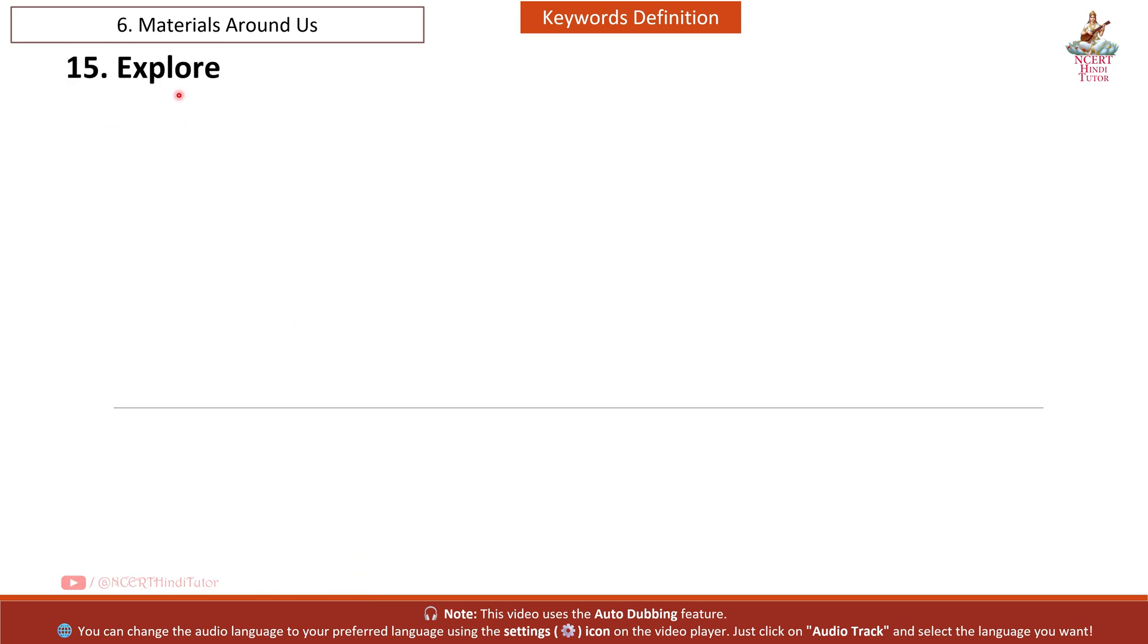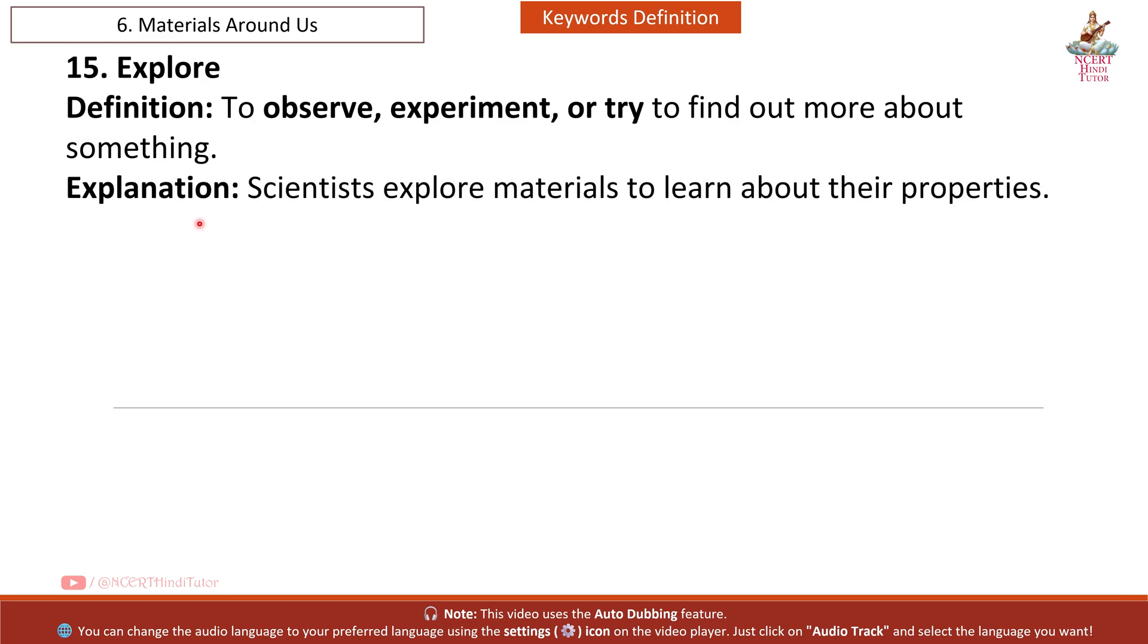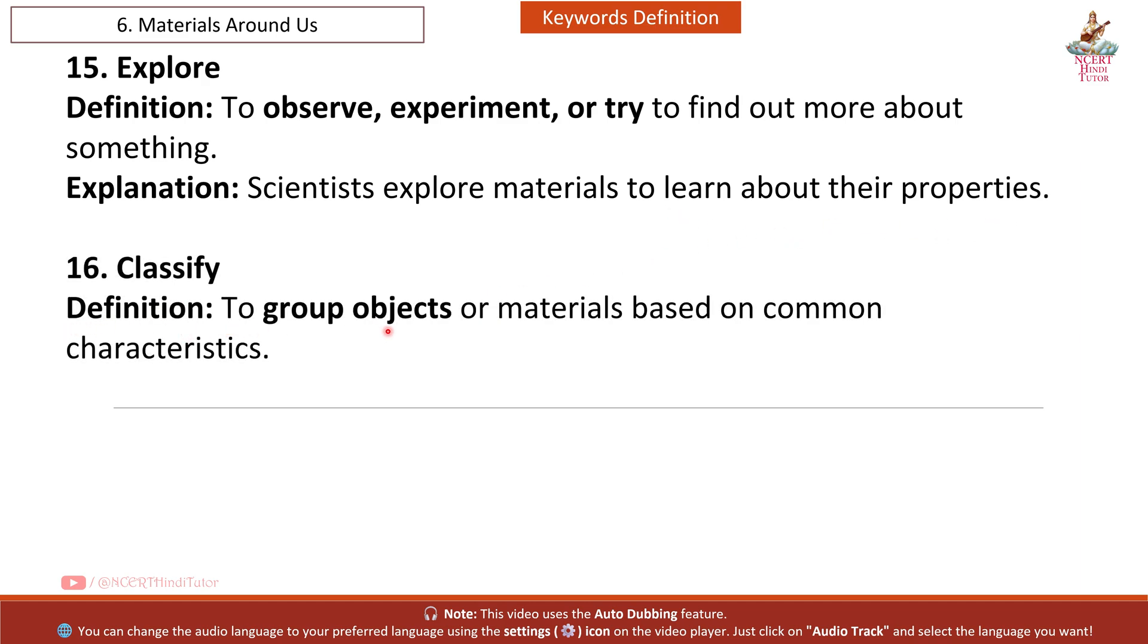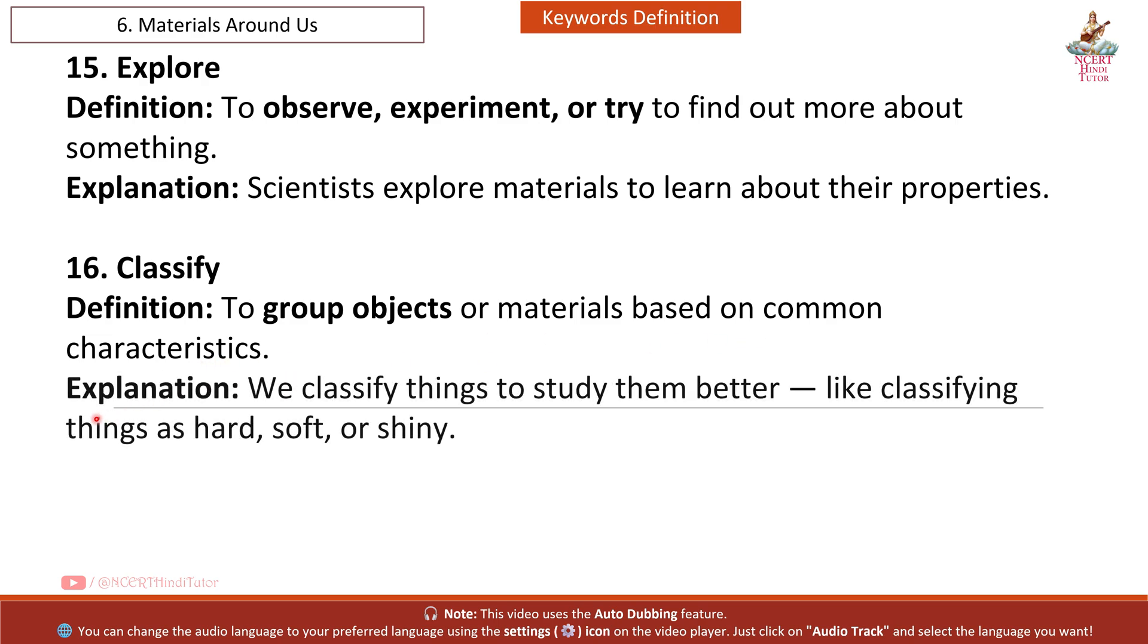Fifteen: Explore. Definition: to observe, experiment or try to find out more about something. Explanation: scientists explore materials to learn about their properties. Sixteen: Classify. Definition: to group objects or materials based on common characteristics. Explanation: we classify things to study them better, like classifying things as hard, soft or shiny.